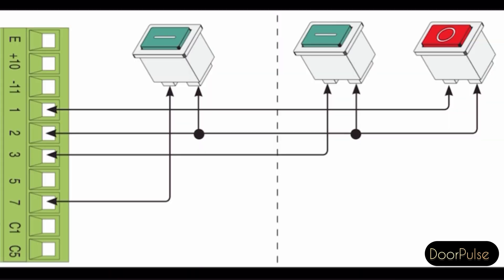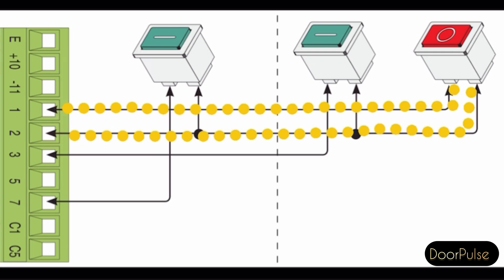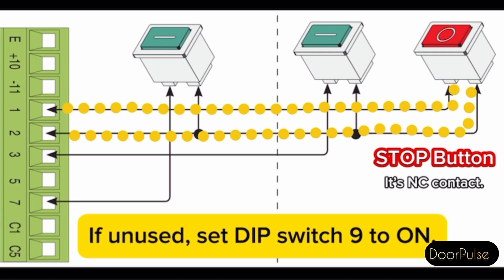Control devices: pin 1 and pin 2, stop button. It's NC contact, for stopping the boom while excluding the automatic closing. To resume movement either press the control button or any other control device. If unused, set DIP switch 9 to ON.